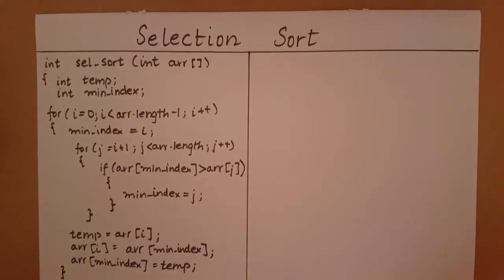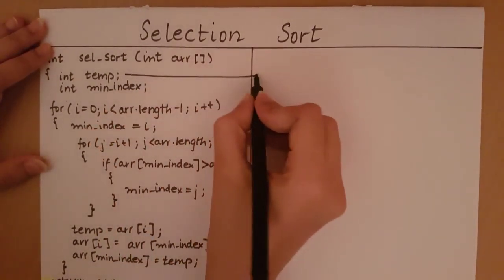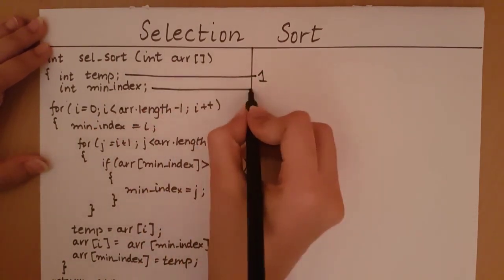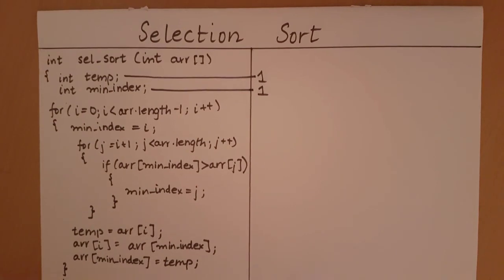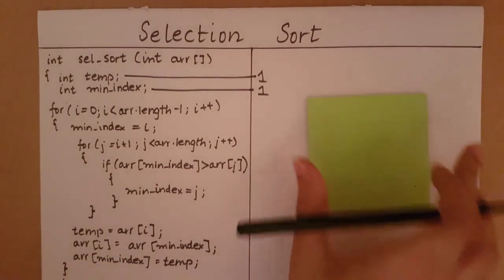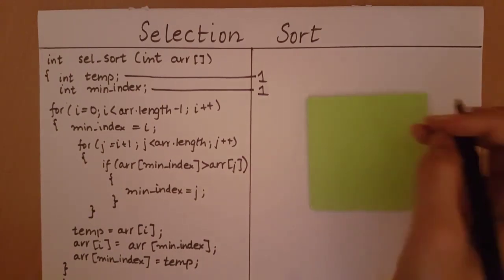So let's start by counting the primitive operations. 'int temp' will take one primitive operation, 'int minIndex' another one, and now we come to the i loop. Before we get into how many exact primitive operations this statement is going to take, let's see how many times this loop will execute. I'm going to consider an array of size n, that is the array has n number of elements.